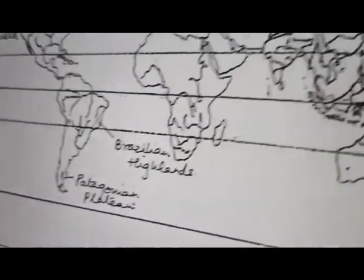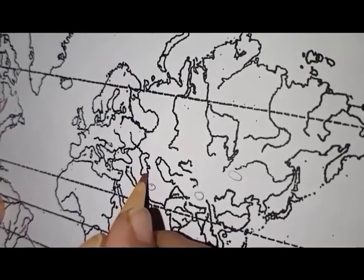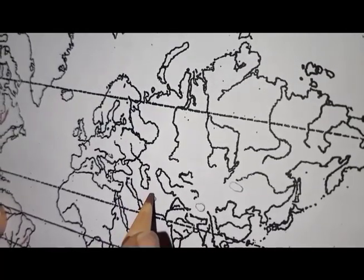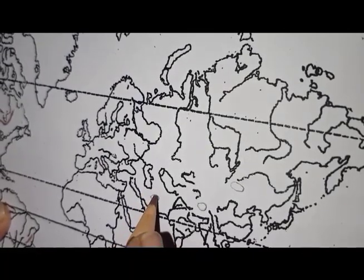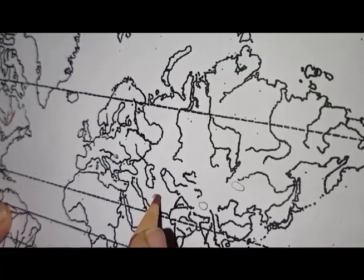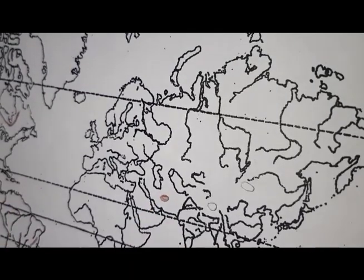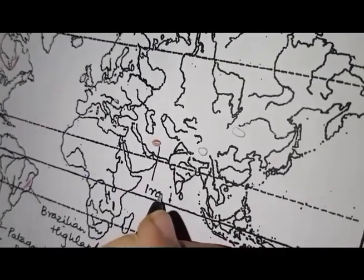Then we will mark the Iranian Plateau. So this is the Caspian Sea, this is the Persian Gulf. In between these two, over here, you'll draw it in an oval shape like this. This is the Plateau of Iran or Iranian Plateau.